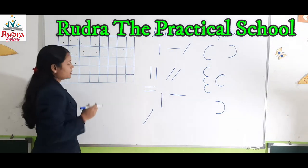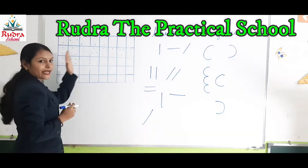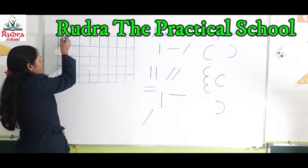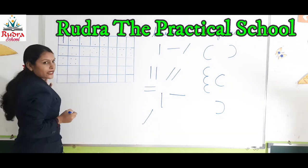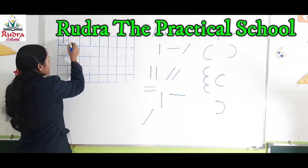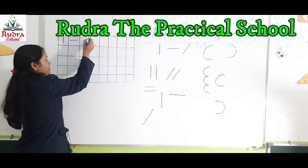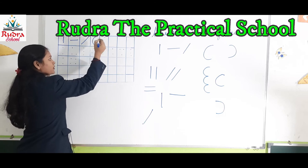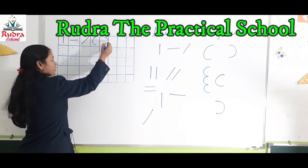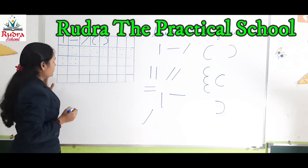Now see how to write numbers in a box. First we will write the patterns again: join these two dots — standing line, slanting line, left curve, and right curve. Now we will write numbers.